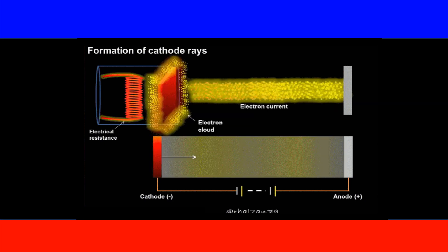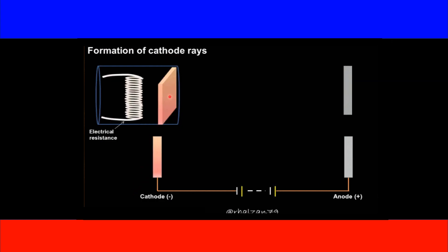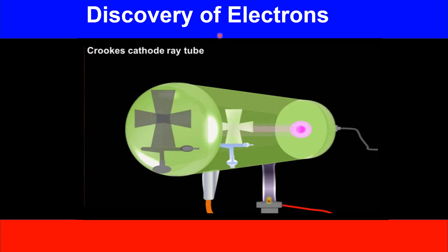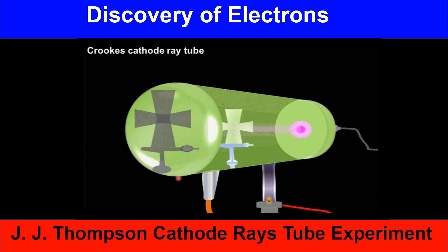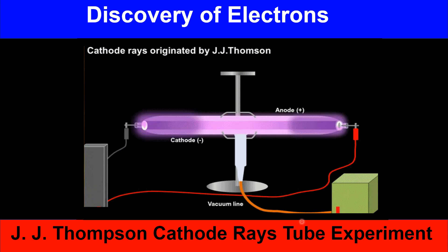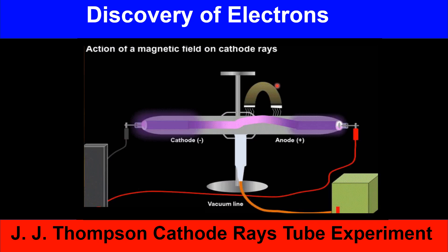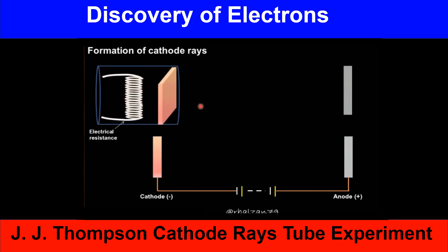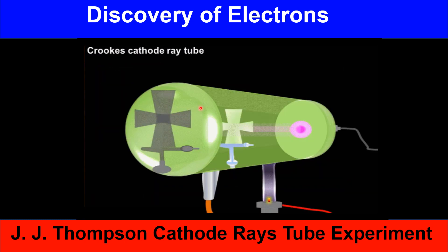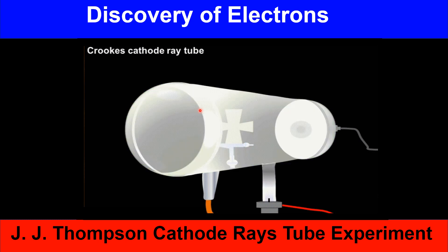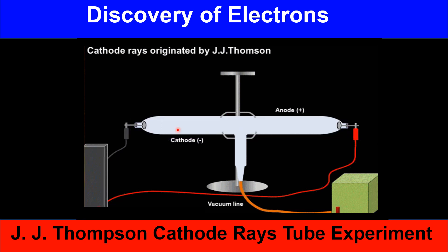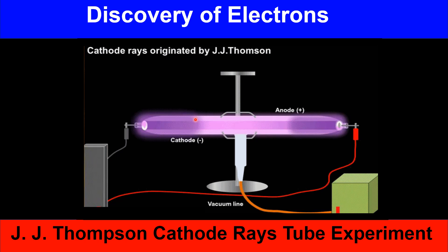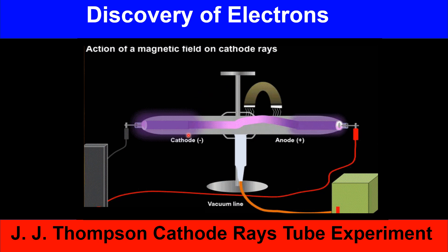In this video we are going to talk about the discovery of electrons and how JJ Thomson discovered the electron using the cathode ray tube experiment. Before 1897, it was believed by the scientific community that matter is made up of the smallest particles, which are indivisible. These were known as atoms — this was basically Dalton's atomic theory, which proposed that the atom is the smallest particle of matter.